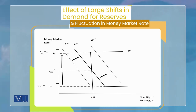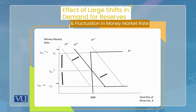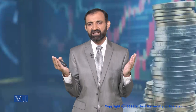یہی بات دوسری سائیڈ پہ دیکھ لیں — کسی وجہ سے banks نے اپنے reserves کی demand بہت کم کر دی۔ بہت کم کرنے کے نتیجے میں demand اور supply کا intersection technically IOR سے نیچے کہیں جا کے ہونا تھا۔ لیکن چونکہ یہ floor rate ہے اس سے نیچے money market rate جا نہیں سکتا، تو equilibrium IOR پہ ہی achieve ہو جائے گا۔ The interest rate corridor system limits the fluctuation of the money market rate, as it remains in the range of the interest rate paid on excess reserves and the interest rate charged on discount loans — اس سے باہر نہیں نکل سکتا، اسی وجہ سے اس کی fluctuation کم ہو جاتی ہے۔